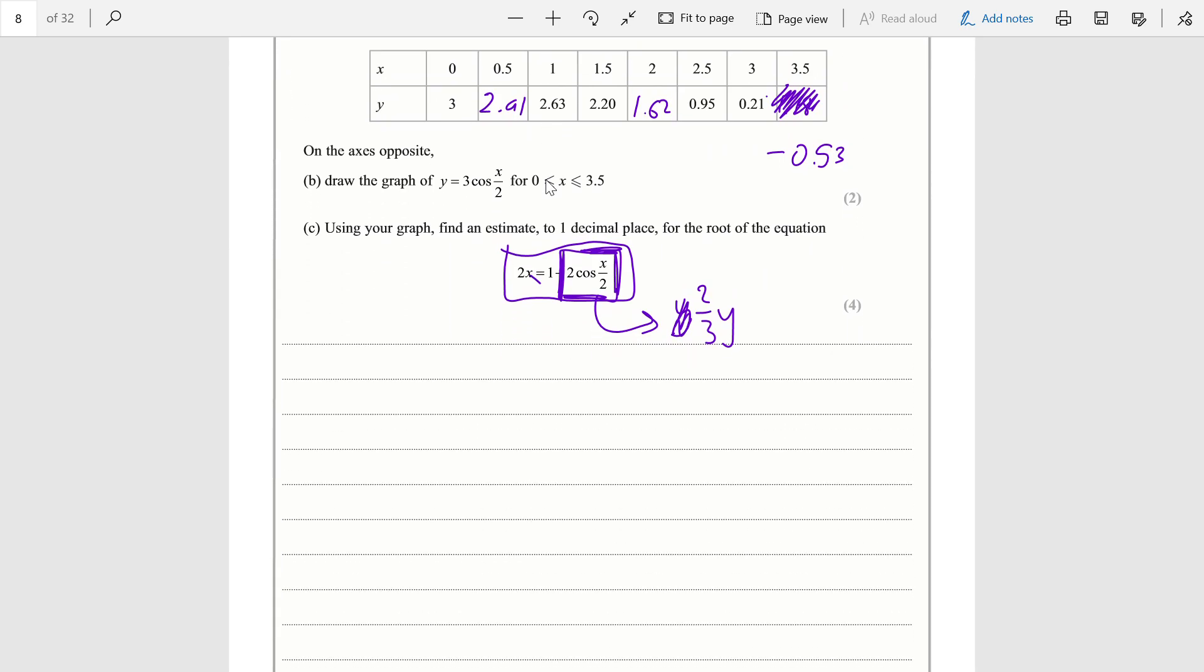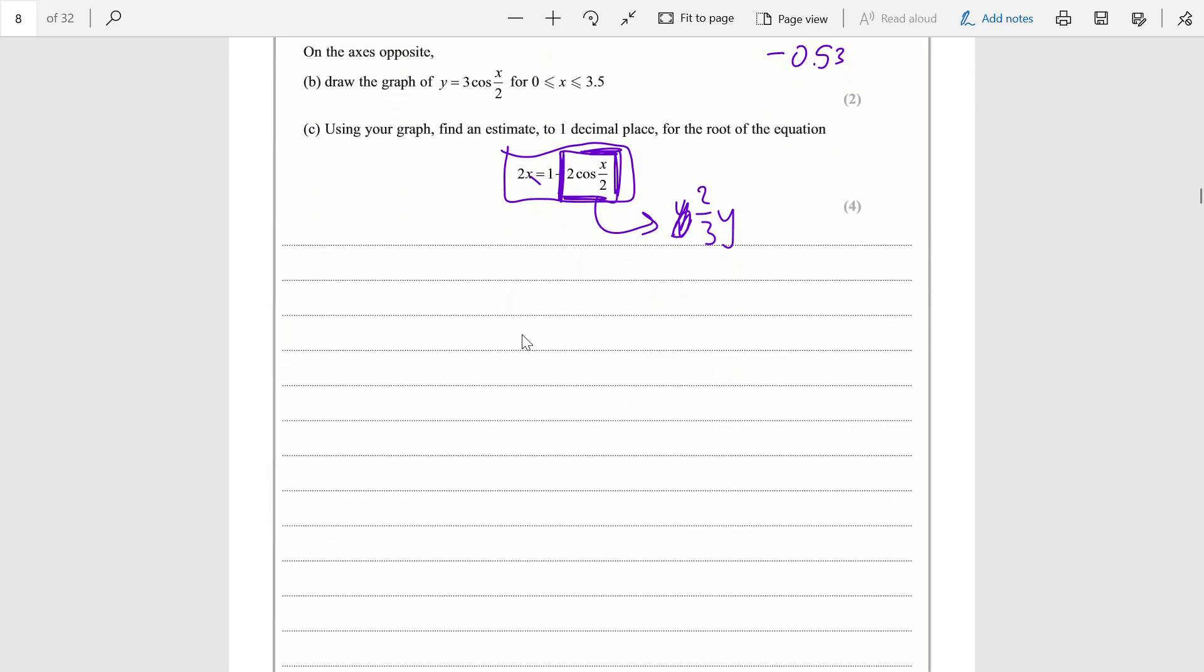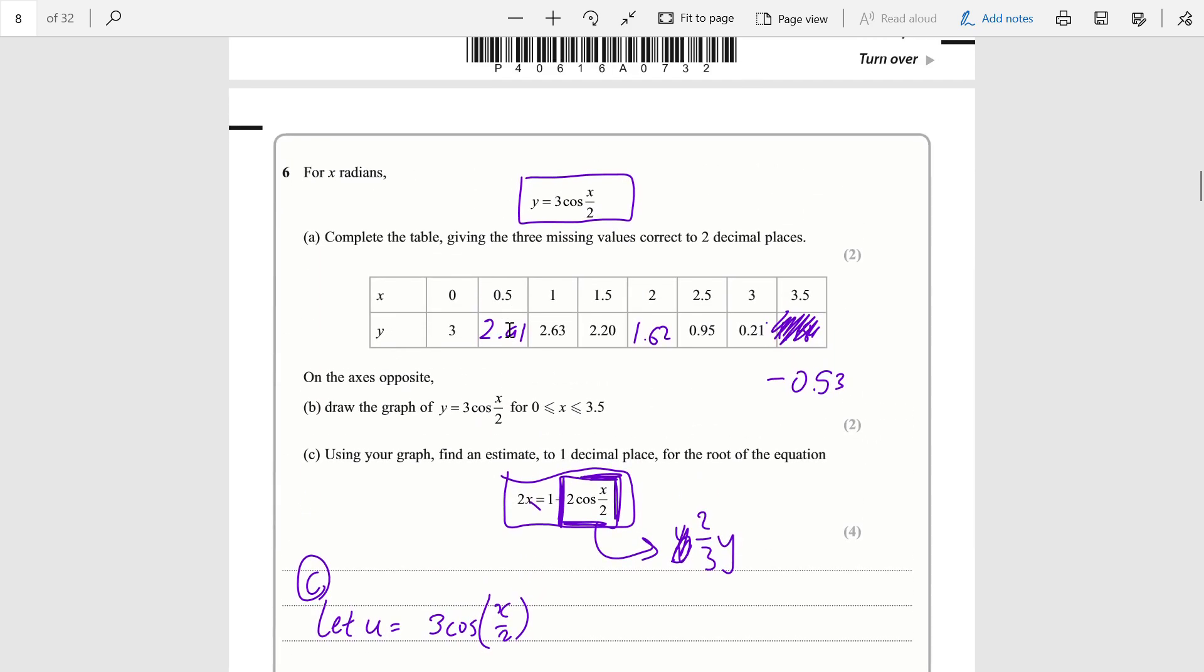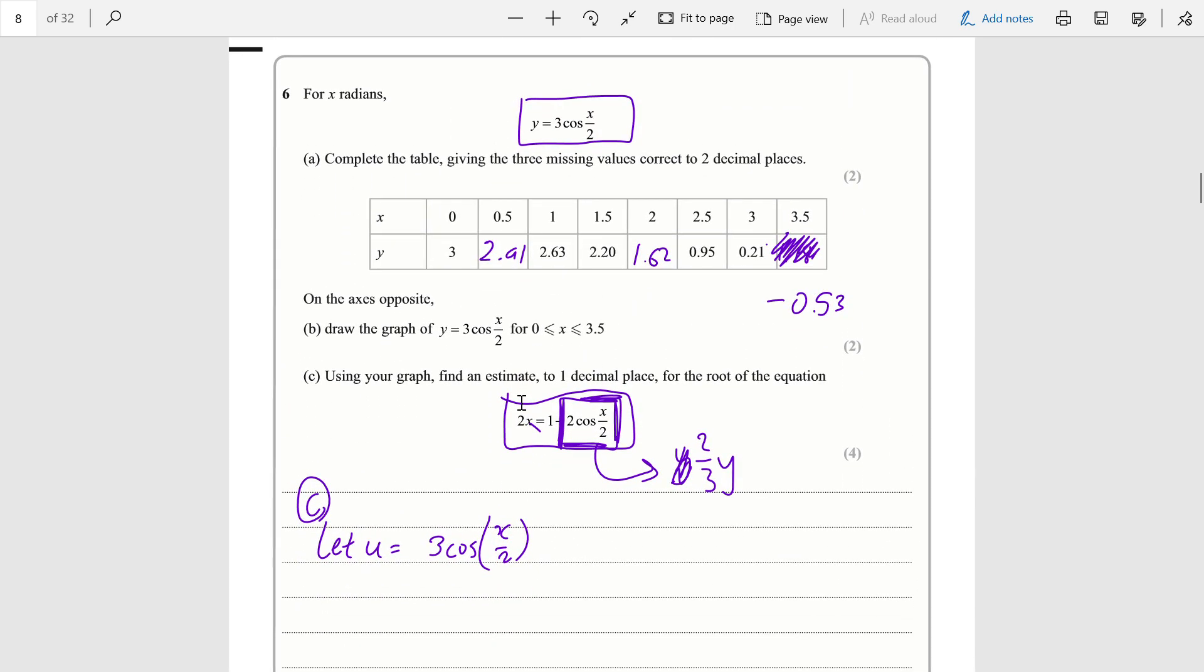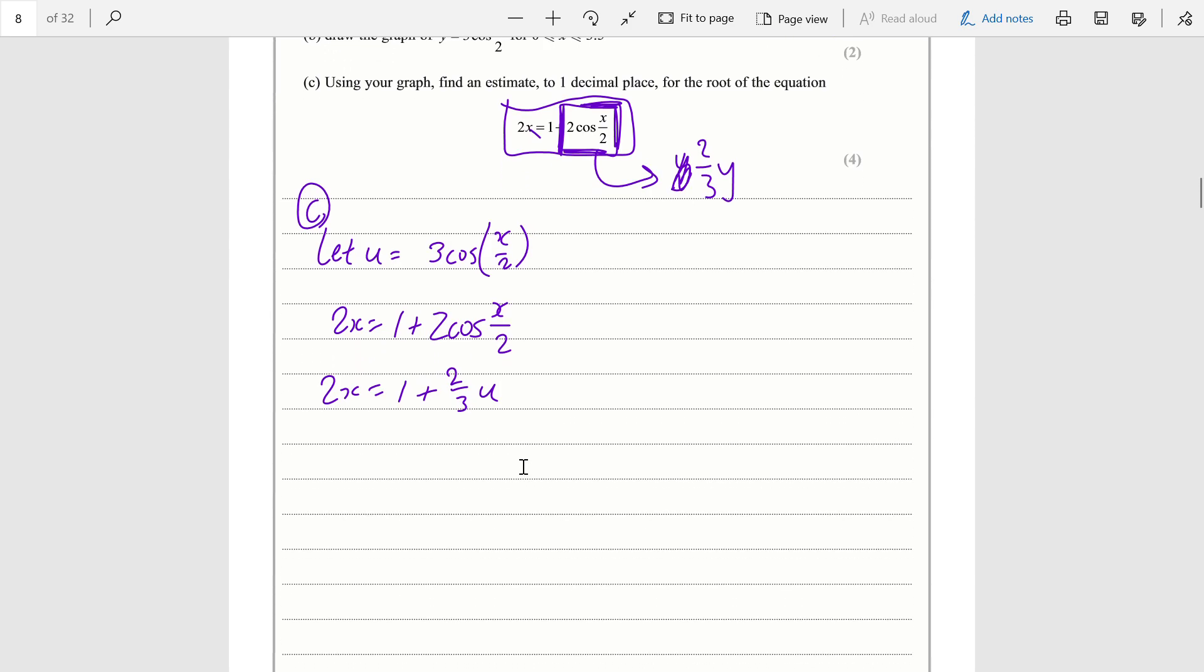So entering part (c), let u be equal to 3cos(x/2), because this is what we are trying to solve for and this is the curve we have already. So then we take the equation that we're trying to solve: 2x = 1 + 2cos(x/2), or rather 2x = 1 + 2/3u.